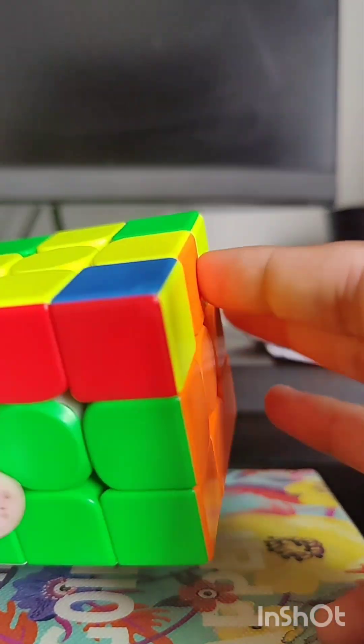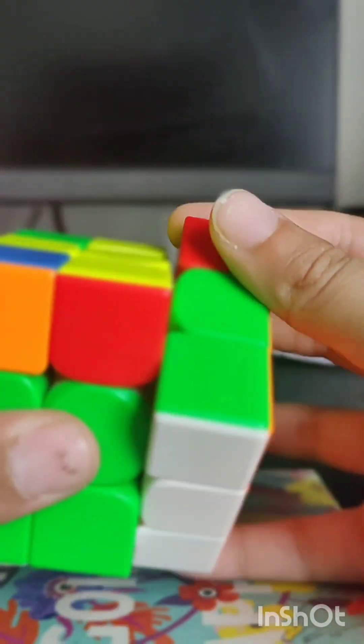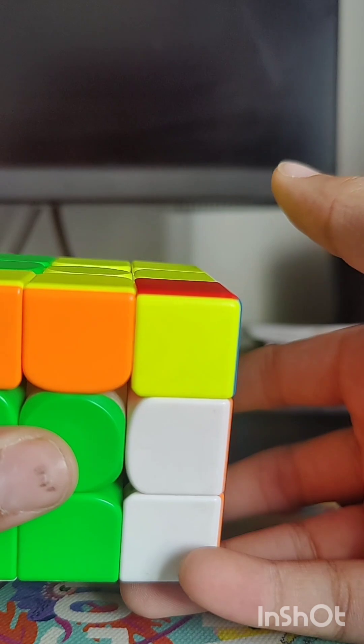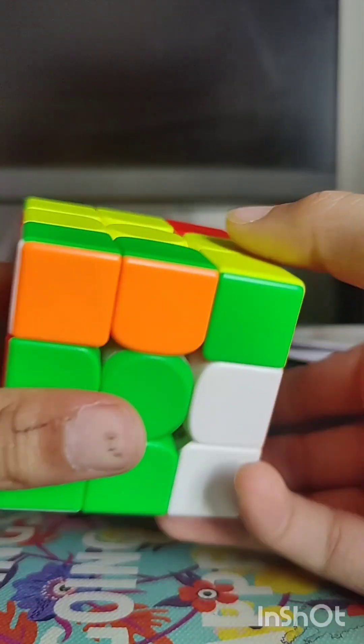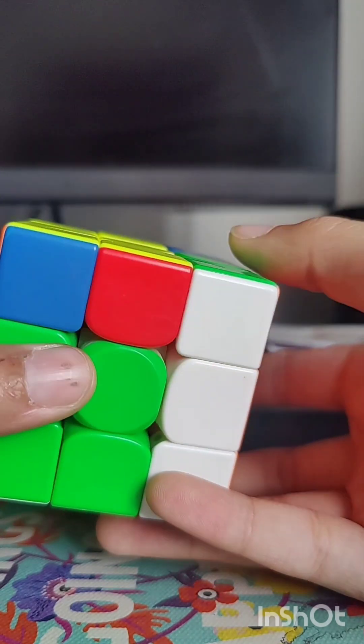It is the next case when we have headlights on both sides. So we basically have to do a Sune, but when you're inserting this pair, move it behind again, then actually insert it.